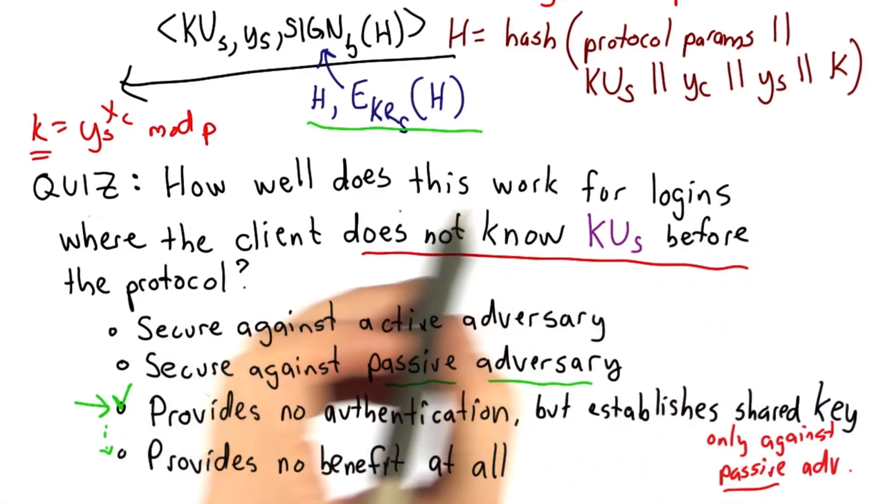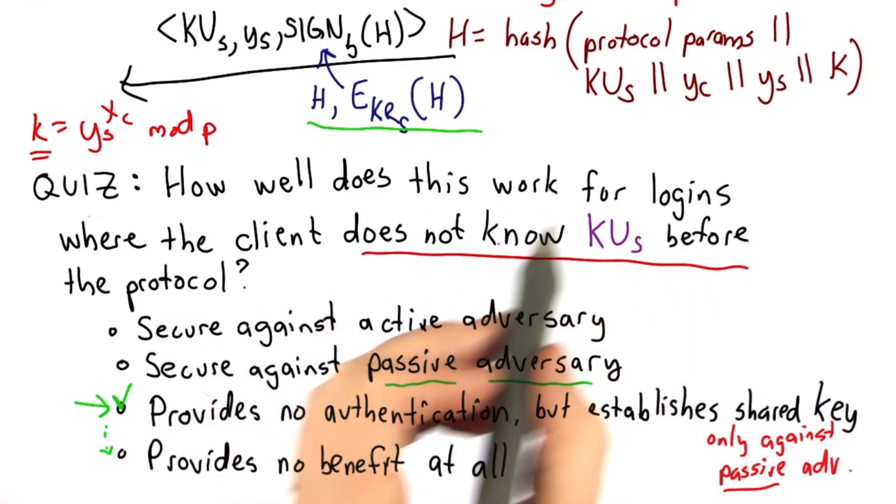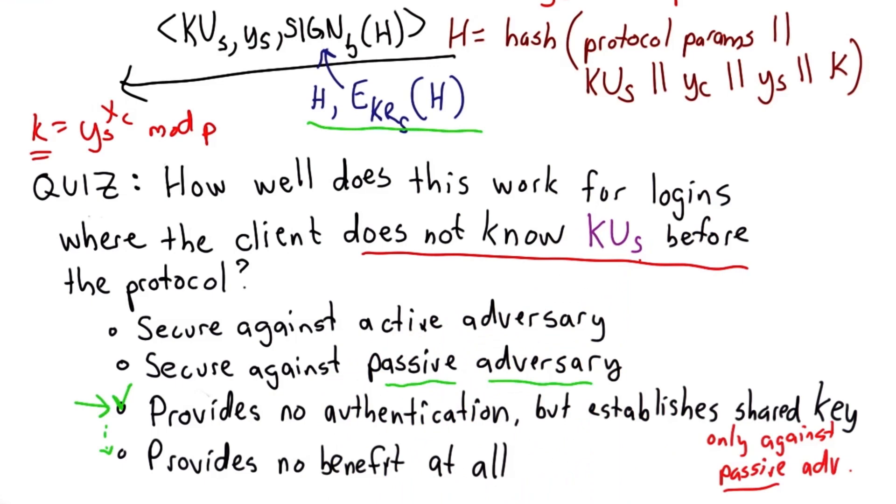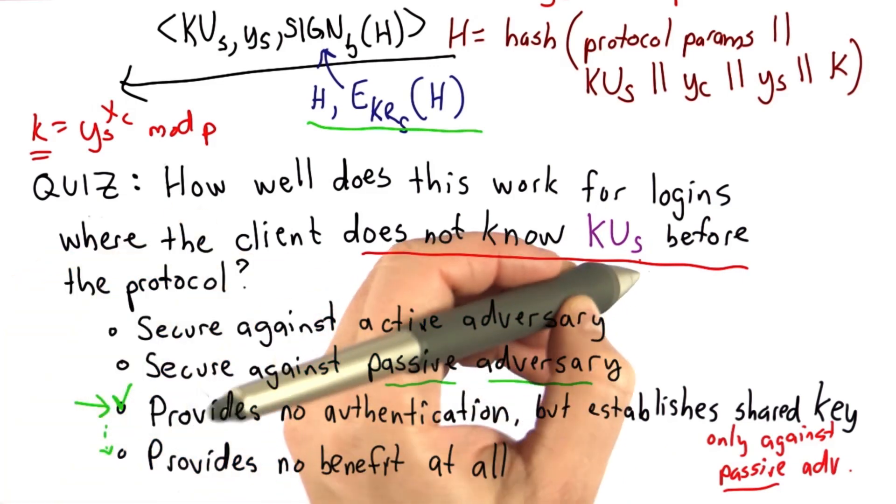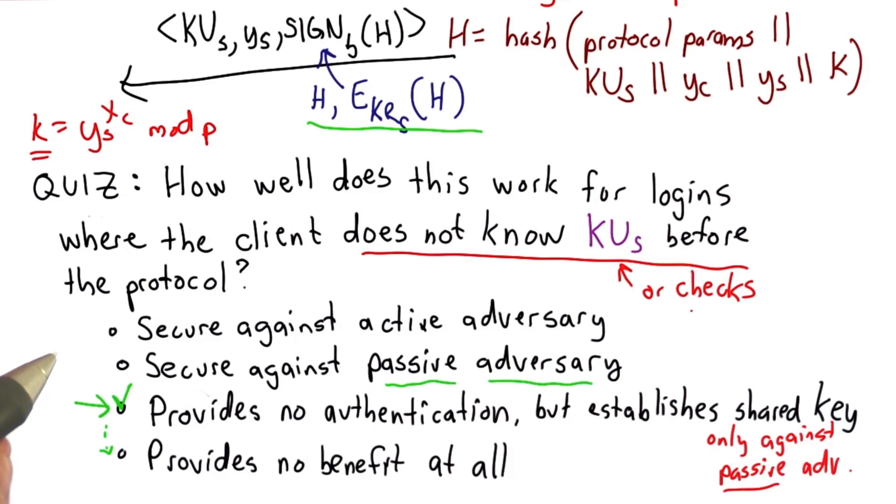So for this protocol to provide a meaningful benefit, it's necessary that the client actually knows this KUS value or has a way to check it before accepting that this is the server that the client intends to talk with.